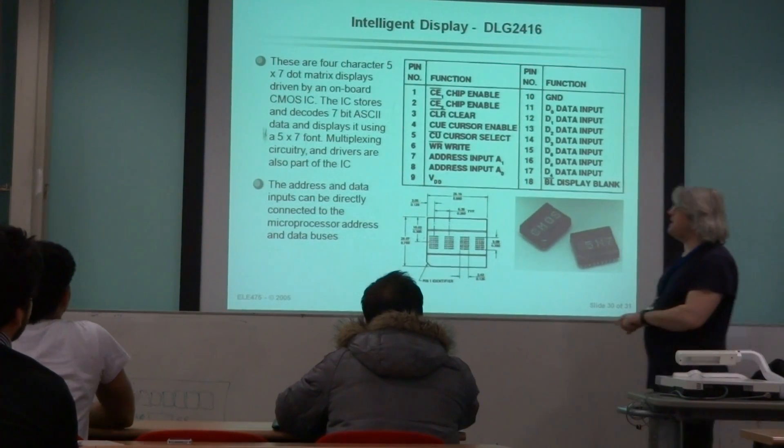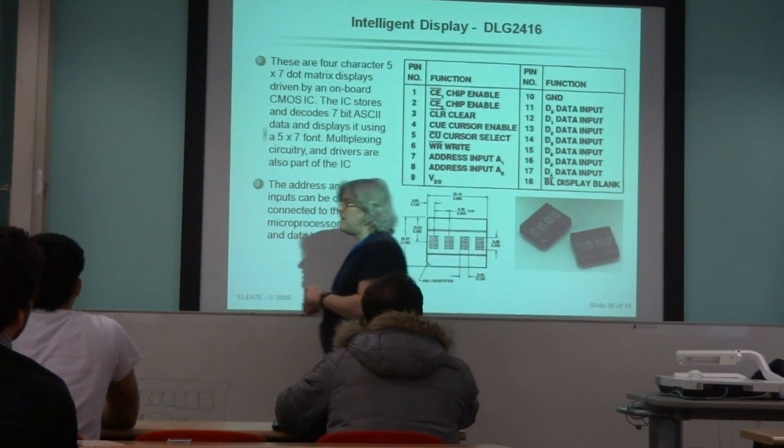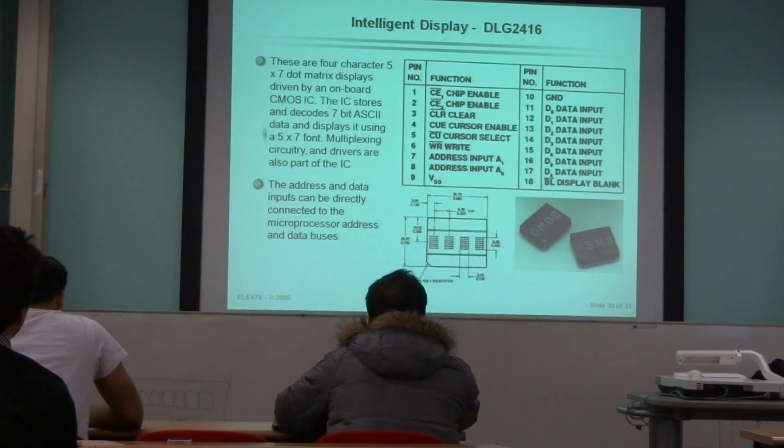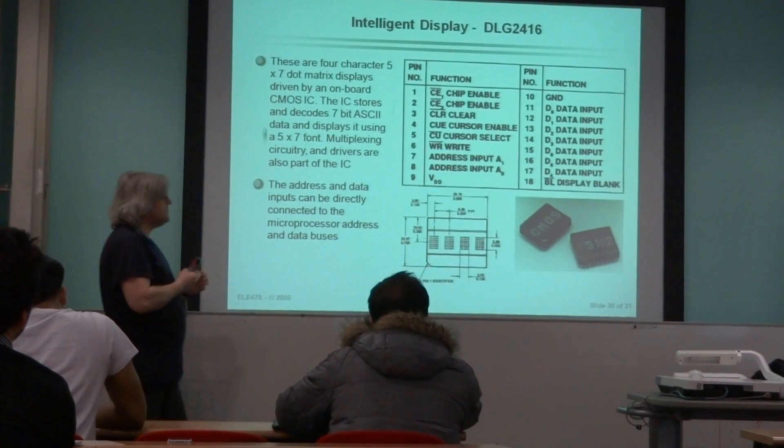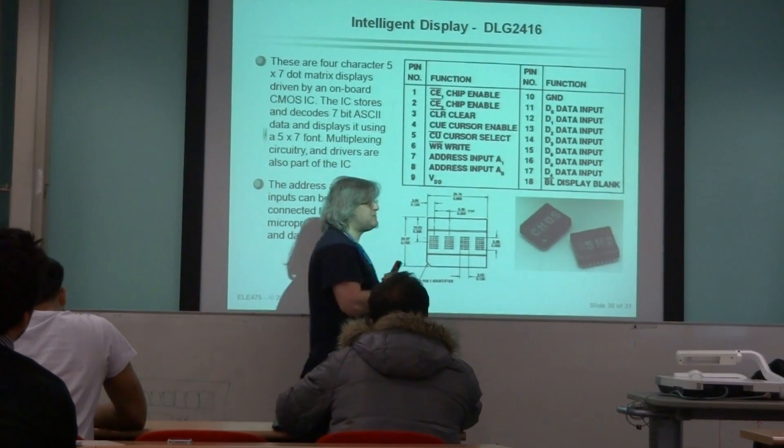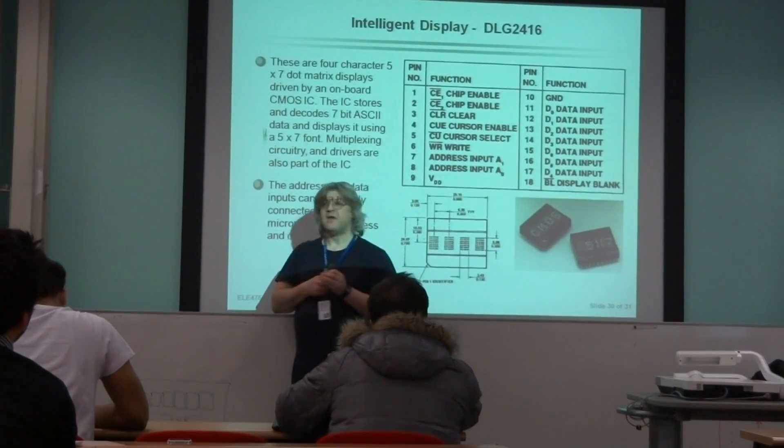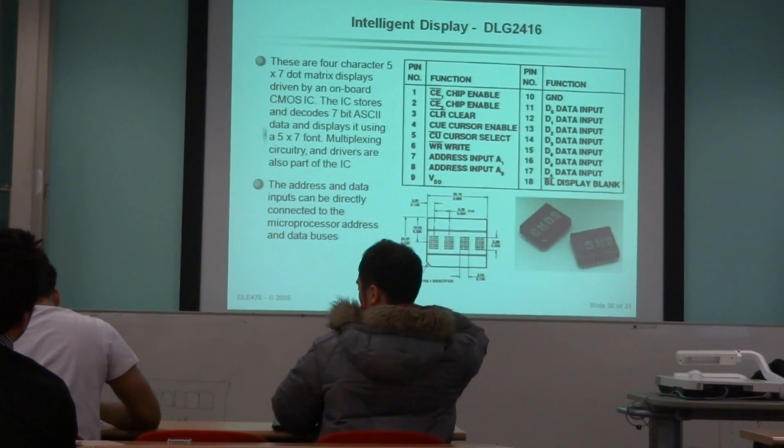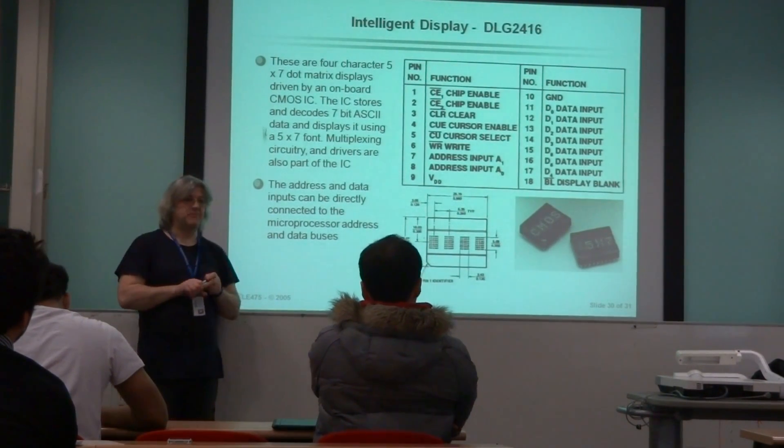Right, the final thing on displays. We've talked about dumb seven-segment displays, silly LEDs, using dumb seven-segment displays with external latching and decoding. I've talked briefly about LCD displays. The nice thing about LCD displays, of course, is they're cheap.